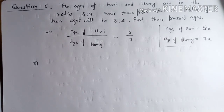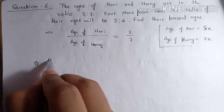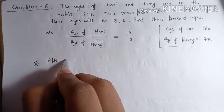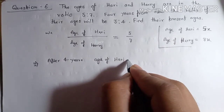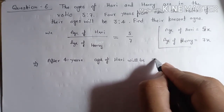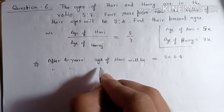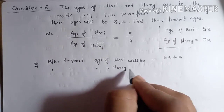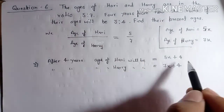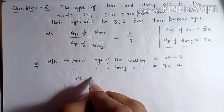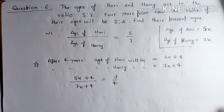It is said that four years from now the ratio becomes three to four. So after four years, the age of Harry will be five x plus four, and the age of the other Harry will be seven x plus four. That ratio is three upon four, so five x plus four upon seven x plus four is equal to three upon four.